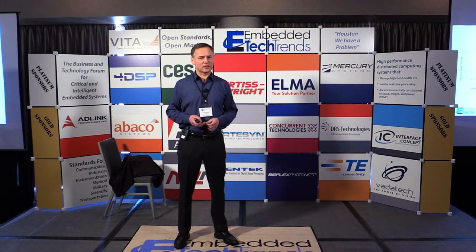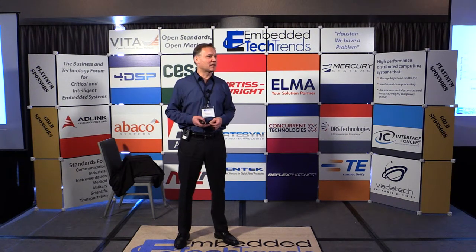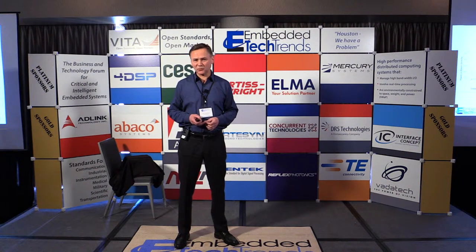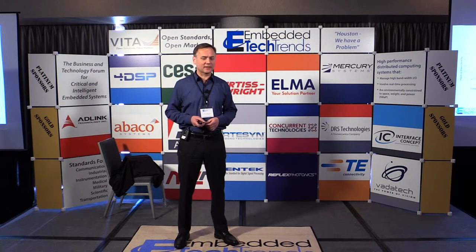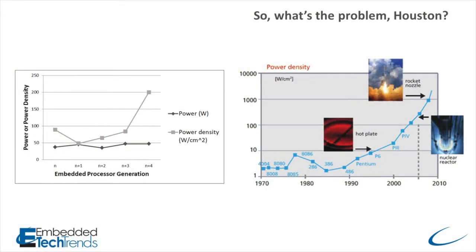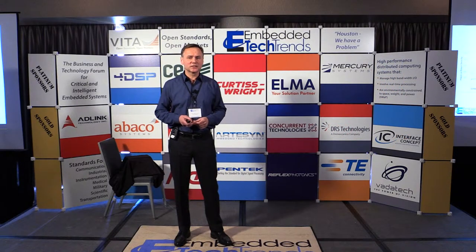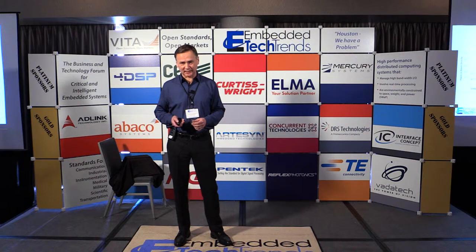But the last generation of both embedded processors and server class processors, we've had a very high power density, or heat density, of around 200 watts per square centimeter — which may not mean anything to anyone who's not a thermal engineer. But if you look at how that compares to things we do know about, it's actually similar to the heat or power density of a nuclear reactor. The good news is that this heat density on processors is on a very small area — not even the full die area, but a smaller subsection of the die.